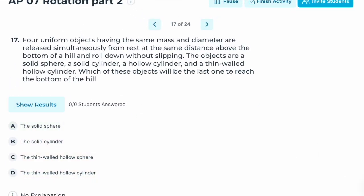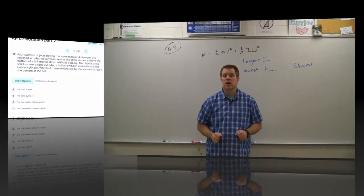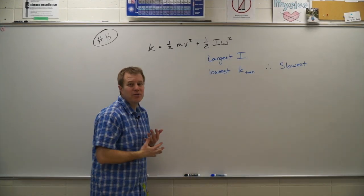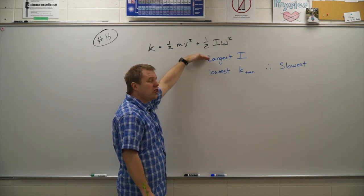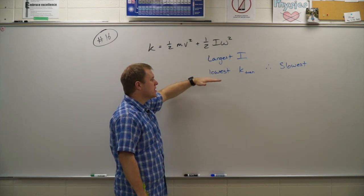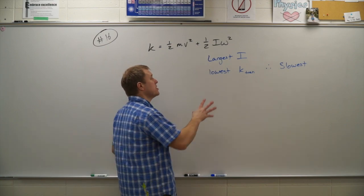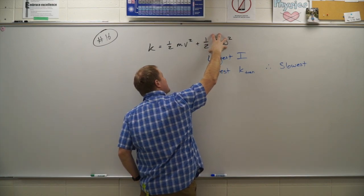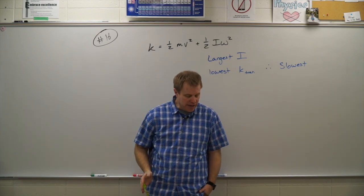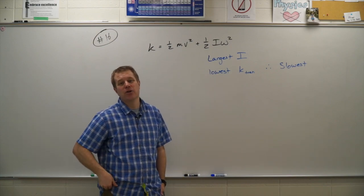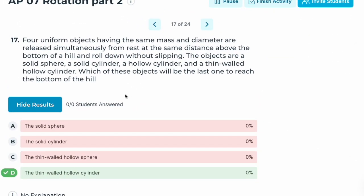Number seventeen: using the same four objects, which will be the last to reach the bottom of the hill? We want the slowest one, so we look for the largest I value — that means the most energy goes into rotation and the least into translation. The thin-walled hollow cylinder has the largest I value and will be the slowest. Correct answer: D.